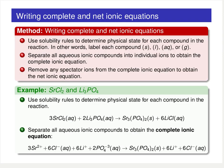We can use these principles, along with the definitions of complete and net ionic equations, to come up with a method for writing them. The first step is to use those solubility rules to determine the physical state for each compound — in other words, put on your labels. Any time you see an aqueous label, all aqueous ionic compounds get split apart into individual ions — that gives you the complete ionic equation. Then, as a final step, if you need the net ionic equation, simply remove all of the spectator ions.